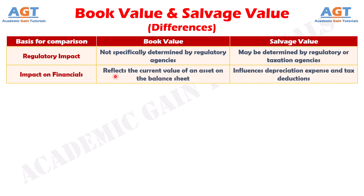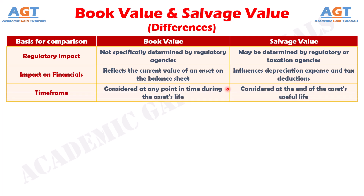Number nine: book value reflects the current value of an asset on the balance sheet, whereas salvage value influences depreciation expense and tax deductions. And finally, difference number ten: book value is considered at any point in time during the asset's life, whereas salvage value is considered at the end of the asset's useful life.